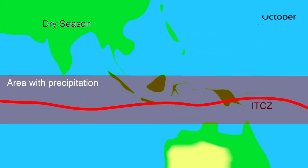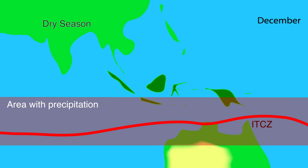After June, the ITCZ moves south along with the sun. The rain season north of the equator ends while the rain season in the area south of the equator begins. In December, the sun gives the most energy to the Tropic of Capricorn, moving the ITCZ further south and starting the rain season there. Because of this movement of the ITCZ, rain and dry seasons exist.